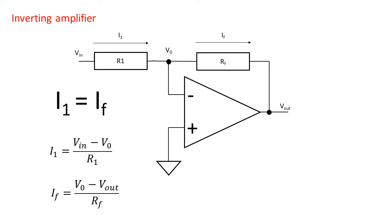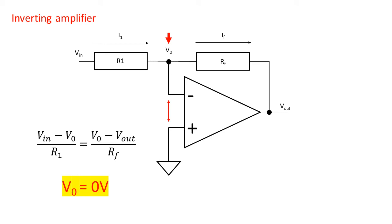IF will be equal to V0 minus Vout over RF. We already concluded that V0 is our virtual ground, so it must be at 0V.